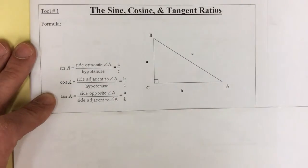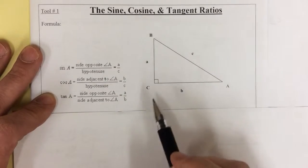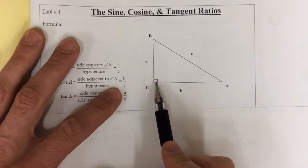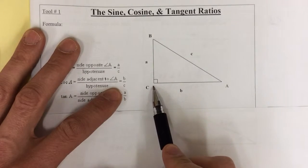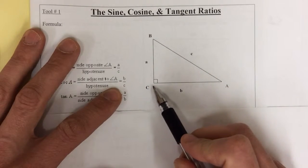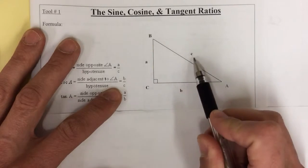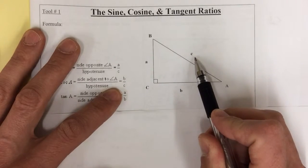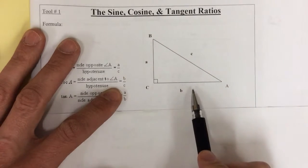We're going to look at trigonometry now. Trigonometry is about relating sides and angles of triangles. The first type of triangle we're going to look at is the right triangle. A right triangle has a 90-degree angle — we're going to call that vertex C. We label capital letters at the angle or vertex, and the corresponding small letter on the opposite side. In this right triangle, we have the hypotenuse and the other two sides.